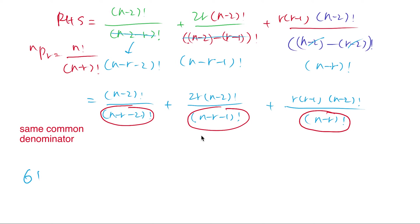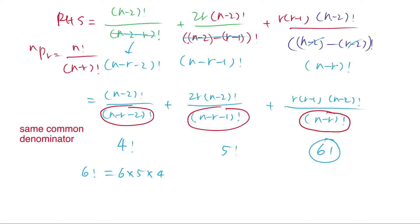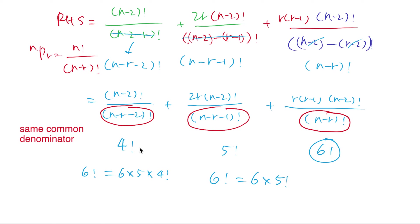This is exactly the same as 6 factorial. This question gives us 4 factorial, 5 factorial, and 6 factorial. So what's 6 factorial? It is 6 multiplied by 5 multiplied by 4 factorial. And 6 factorial can also be written as 6 multiplied by 5 factorial. So 6 factorial includes the previous two terms.